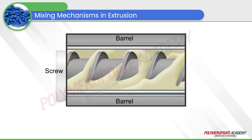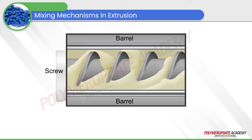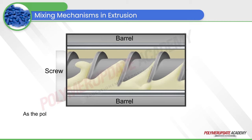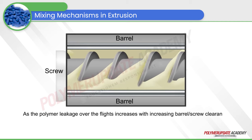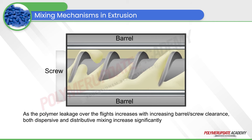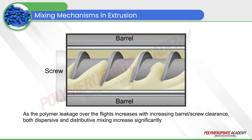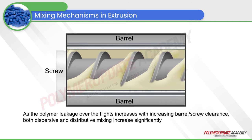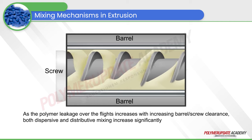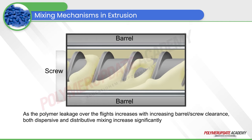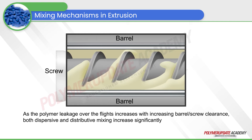A worn-out screw actually makes an excellent mixer. As the polymer leakage over the flights increases with increasing screw and barrel clearance, both dispersive and distributive mixing increase significantly.